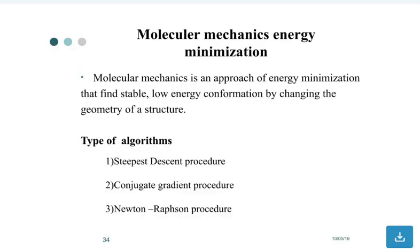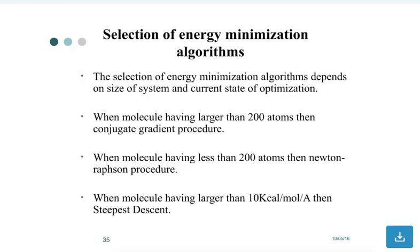Molecular mechanics energy minimization is an approach that finds stable low-energy conformations by changing the geometry of a structure. Types of algorithms include steepest descent procedure, conjugated gradient procedure, and Newton-Raphson procedure.